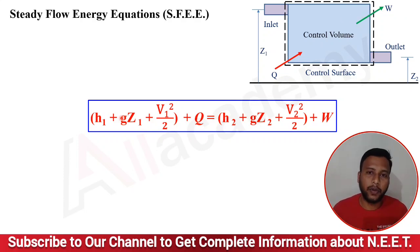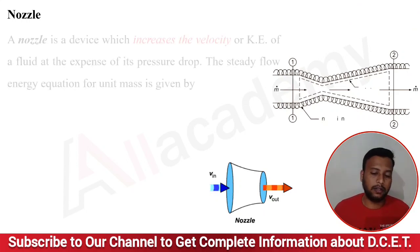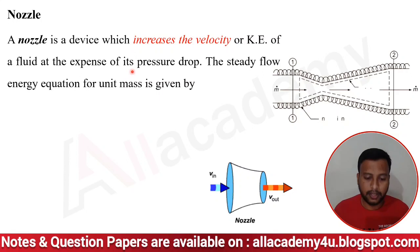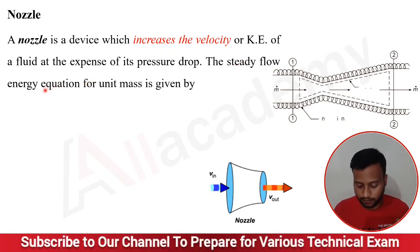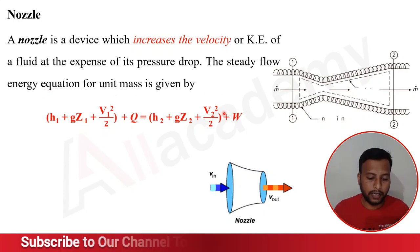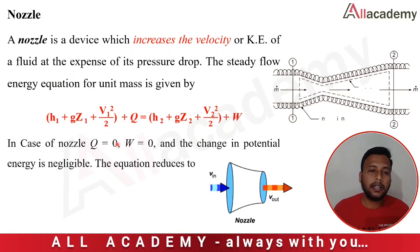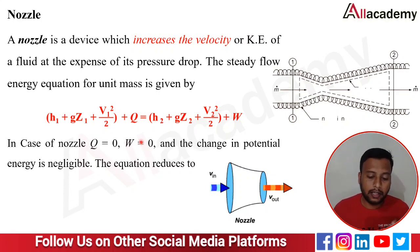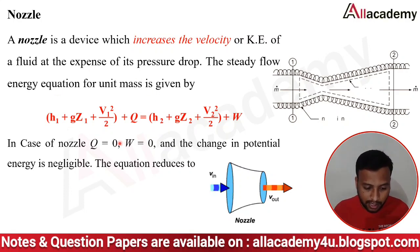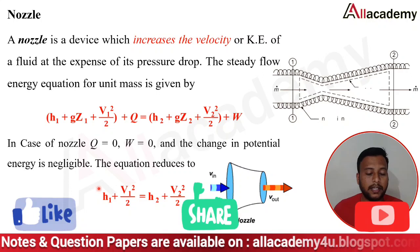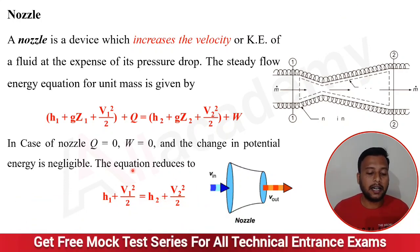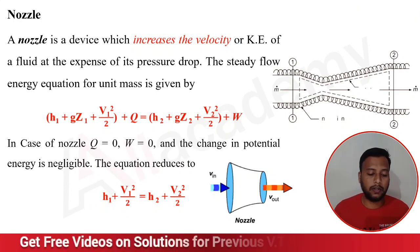The first application is the nozzle. A nozzle is a device which increases the velocity of a fluid or gas passing through it, or the kinetic energy of the fluid, at the expense of a pressure drop. In the case of nozzles, Q and W — the heat interaction as well as the work interaction — are zero. When the change in potential energy is also negligible, the steady flow energy equation reduces to: H1 + V1²/2 = H2 + V2²/2.